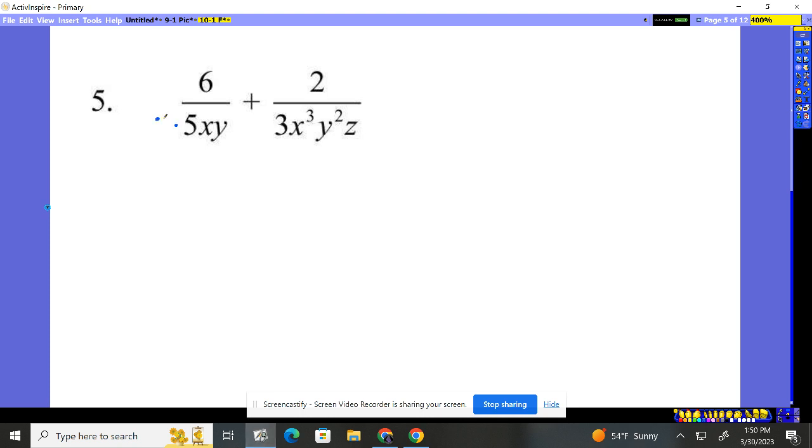How are we going to make that 5 become a 15? We're going to multiply it by 3, which means I'm going to multiply the top by 3. Over here for that 3, I'm going to have to multiply it by 5 to make it 15, which means the top's going to get multiplied by 5. So we've taken care of our numbers. Let's write that out. The bottom, we've got a 15.